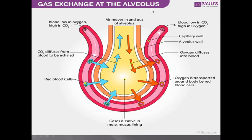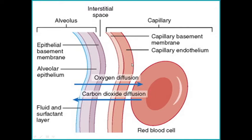This process is very necessary for us to keep us alive. Let's take a closer look. This is the capillary, and these are the red blood cells. Oxygen diffuses into the blood capillaries and combines with hemoglobin in the red blood cell, and carbon dioxide diffuses out of the red blood cell into the alveolus.